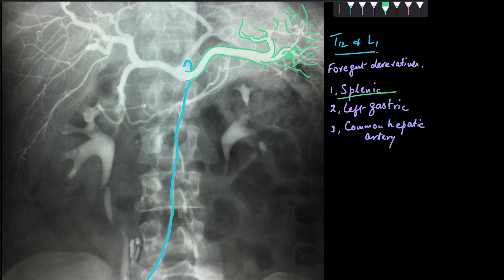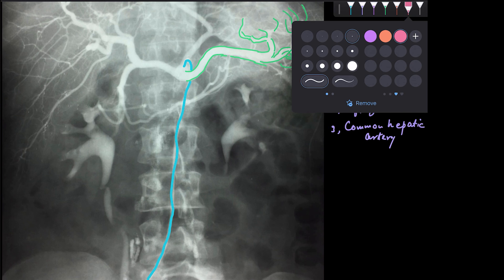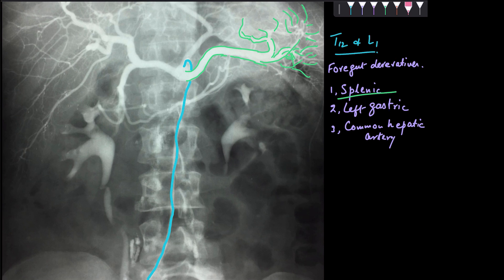After talking about the splenic artery, let's take another artery — that is my left gastric artery. You can see the left gastric artery which ascends up and is directed towards the lower esophagus. It supplies the lower esophagus and then comes down, giving multiple branches around the lesser curvature of my stomach.